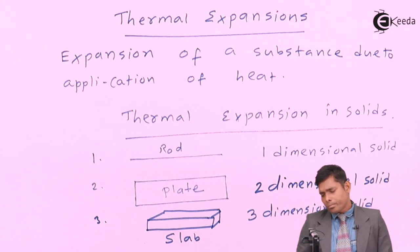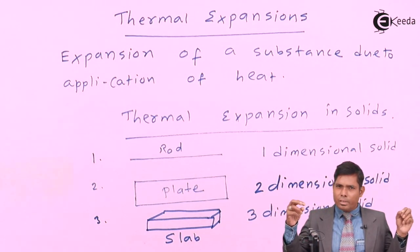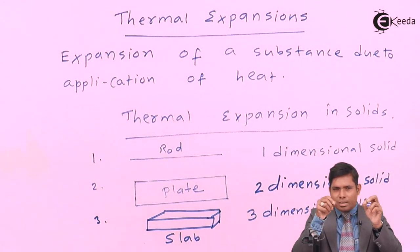One dimensional solid, two dimensional solid and three dimensional solid. So, in case of a one dimensional solid, we will neglect the area cross section. We will consider this as a straight line.